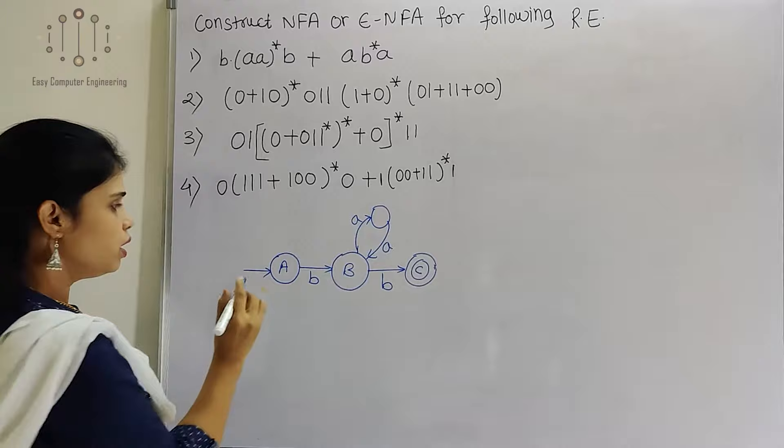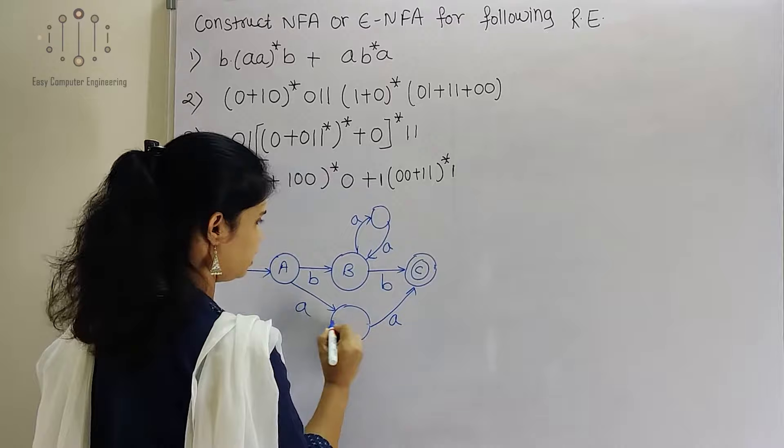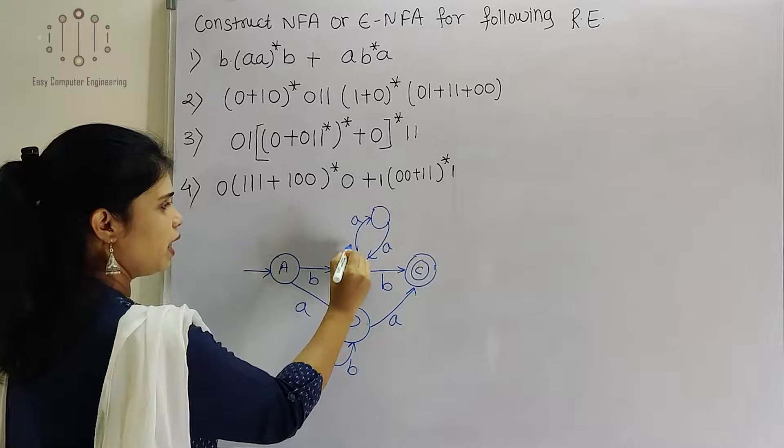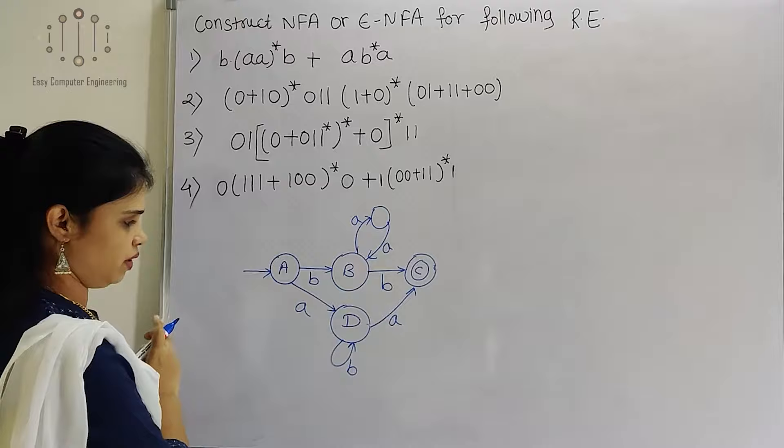This is the B·A*B part. Now there is the OR option: AB*A. From the same start state we will show A, then B*, then A. So A, B*, A gives us one more state. So B·A*B then AB*A — in this way we can show the finite automaton for the given first example.